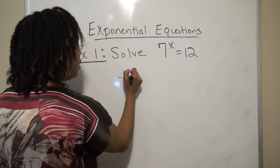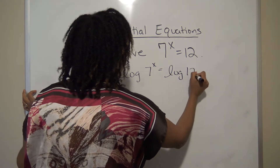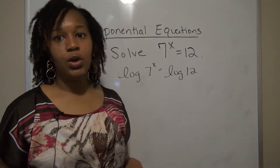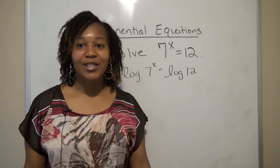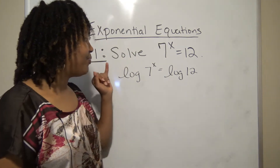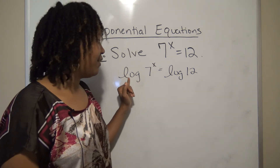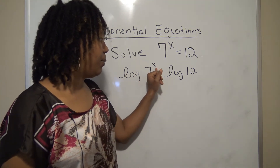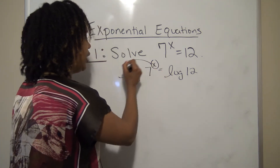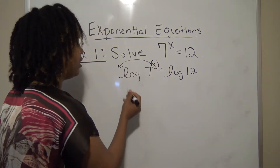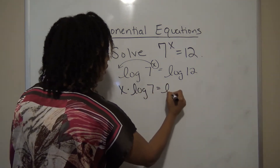We take the log of both sides — I'm using the common log. So we have log(7^x) = log(12). Now using the power property of logs, when you have the log of something raised to a power, you can move that power to the front as multiplication. This becomes x times log(7) equals log(12).